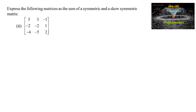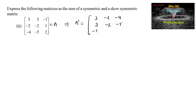Let's take the third one. Let the matrix A be given. The transpose of the matrix, interchanging rows and columns, gives: [3,-2,-4; 3,-2,-5; -1,1,2].